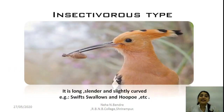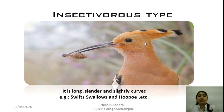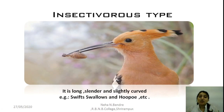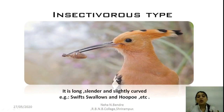Next is the insectivorous type of beak, observed in birds which feed on insects. These birds have a long, slender kind of beak for collecting insects — long, slender, and slightly curved at the tip for catching very tiny small insects. This kind of beak is also present in the woodpecker and the hoopoe. The insectivorous type of beak is seen in swifts, swallows, and the hoopoe.